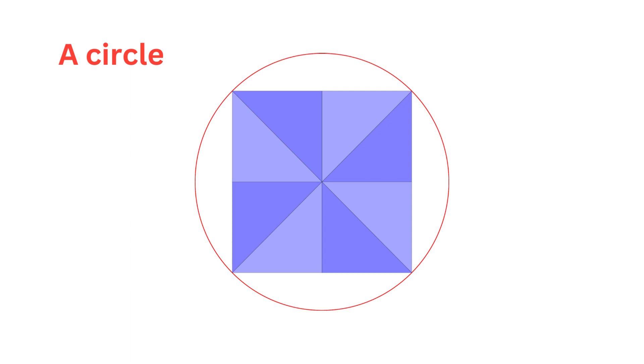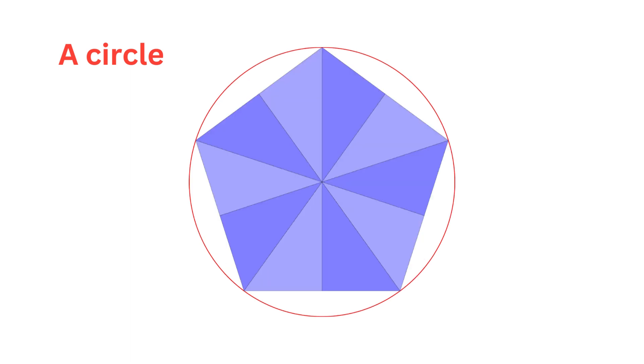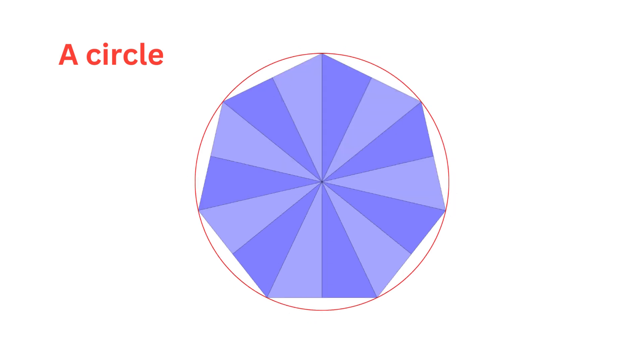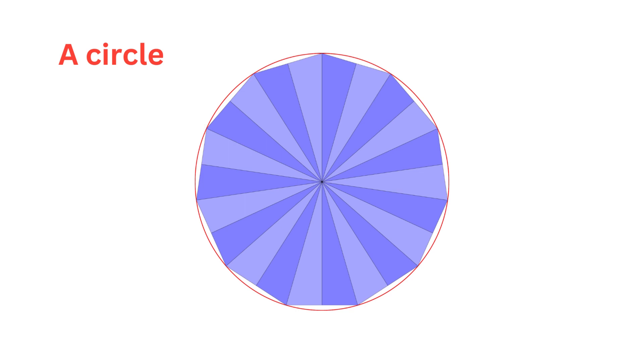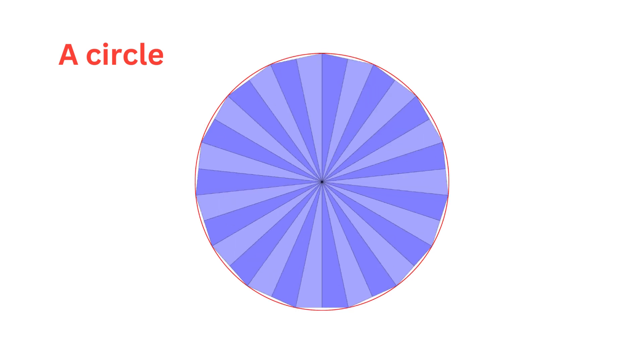Let's start with a circle and its inscribed regular polygons: square, pentagon, hexagon, heptagon, octagon, nonagon, decagon, hendecagon, dodecagon, tridecagon, tetradecagon, and so on. Poof!